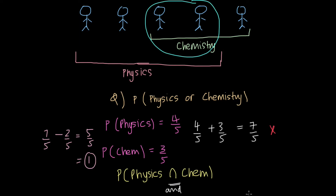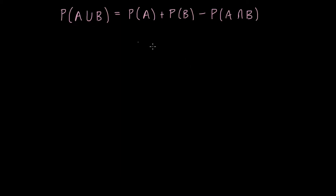Based on what we have done here, we can come up with a formula. This notation here is the union symbol, which can be used to represent OR. So when we have two events A and B, and we want to find the probability of A or B occurring, we say that is equal to the probability of A plus the probability of B minus the probability of both A and B occurring. Such a case is called non-mutually exclusive because the two events A and B can occur at the same time.